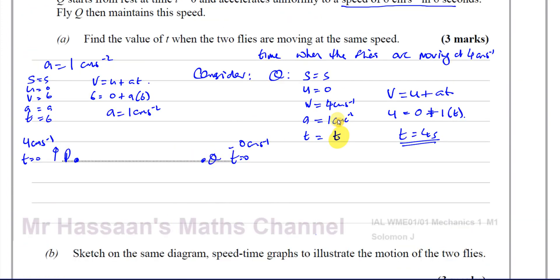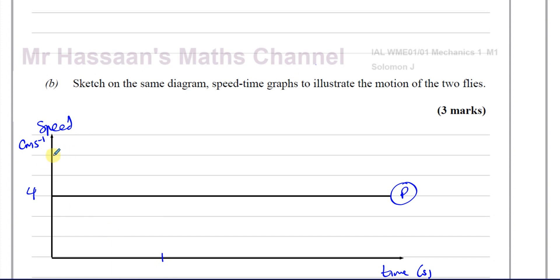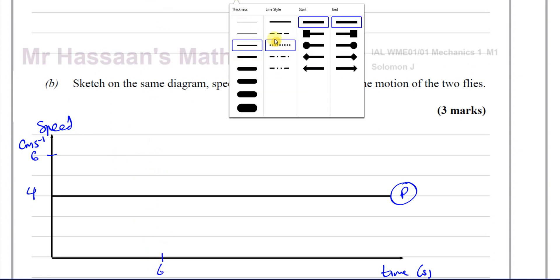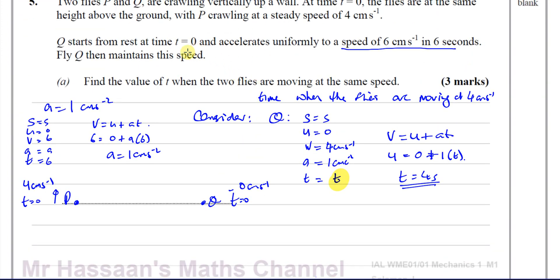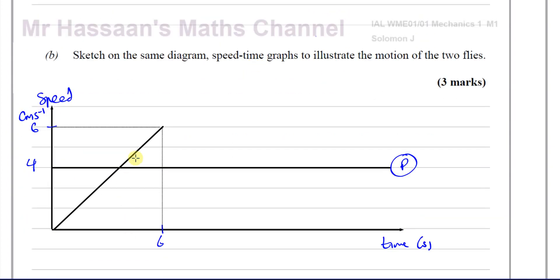And then Q: it starts off at rest and it accelerates in 6 seconds up to 6 centimetres per second. So at 6 seconds it reaches 6 cm per second — that's the line going from the origin up to that point. After it reaches 6 centimetres per second, it maintains that speed and carries on at 6 centimetres per second. That's the journey of Q.